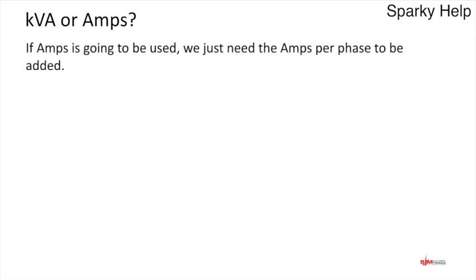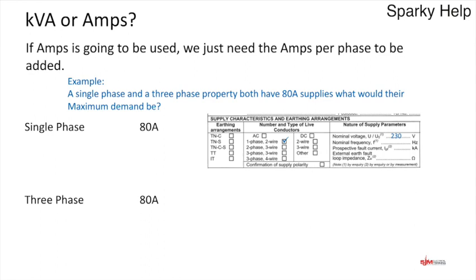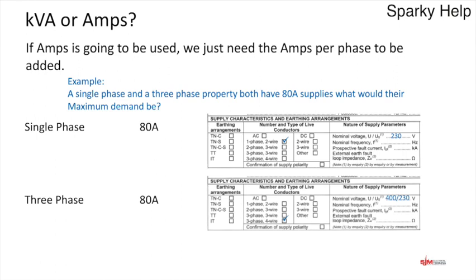What about expressing maximum demand in amps? It's the amps per phase that you need to put on — not the total. For a single-phase installation you'd write 80 amps and delete the KVA. For a three-phase installation it's also 80 amps per phase. If you wonder how you'd distinguish between them, supply characteristics indicate whether it's single-phase one wire or three-phase four wire, with the voltages written in — 230V single-phase, or 400/230V three-phase.